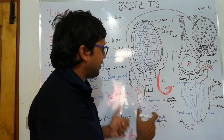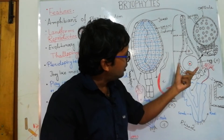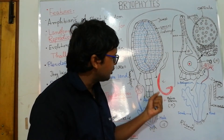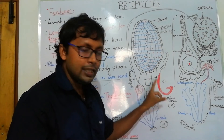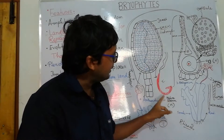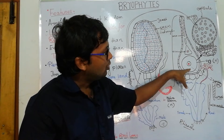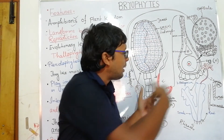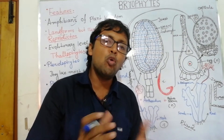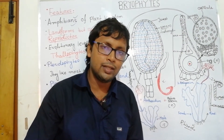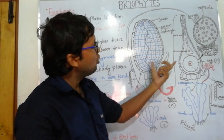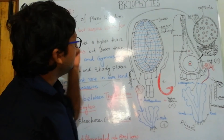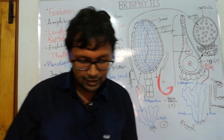The type of reproduction in bryophytes is oogamous, because the antherozoid is motile and the egg is non-motile — they are heterogametic and look different from each other. This oogamous type of reproduction has already been covered in algae. So these are the overall traits of bryophytes.